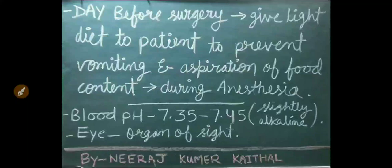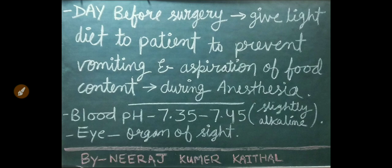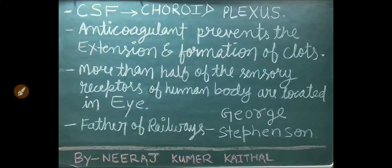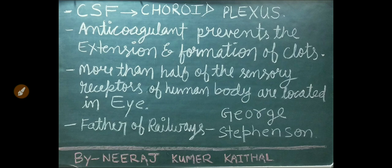Day before surgery, give light diet to patient to prevent vomiting and aspiration of food contents during anesthesia. Normal blood pH is 7.35 to 7.45. Blood is slightly alkaline. Eye is the organ of sight. Cerebrospinal fluid (CSF) is secreted by the choroid plexus. Anticoagulant prevents the extension and formation of clots.